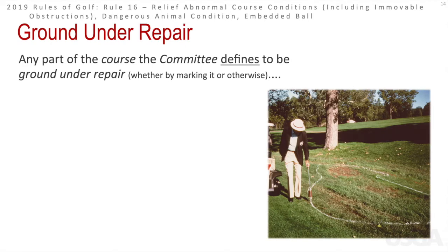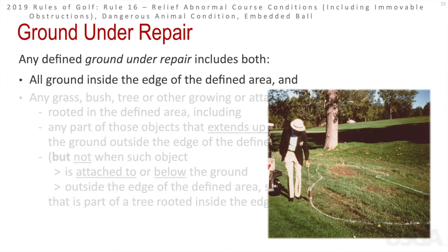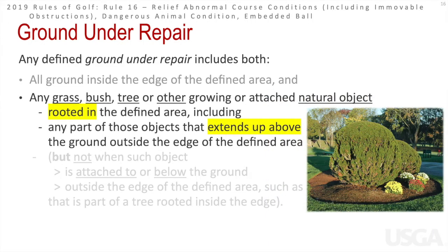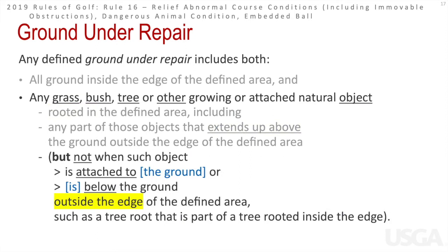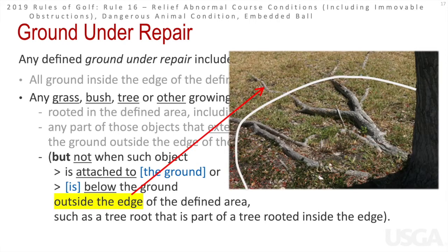The definition of ground under repair is any part of the course defined by the committee as ground under repair. In this picture it's marked with paint, but it can be marked in different ways. All the ground inside the edge of the defined area is ground under repair, including any grass, bush, or trees rooted in the area that extend up and above the ground outside that defined area. It does not include things attached to or below the ground outside the edge — a tree root, for example, outside the white line would not provide free relief.